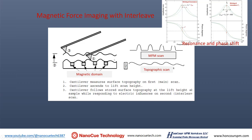The tip scans over the sample the first time with feedback to collect topography. On the second scan, the tip lifts at a separation distance and scans over the sample, recording the phase shift. This phase shift represents the magnetic field — of course, the tip and sample must have a magnetic force between them. So the tip must have a coating of magnetic material, typically cobalt or some other magnetic material, making the tip itself a magnet. The magnetic field between sample and tip produces attractive or repulsive force, causing the phase to shift, and you record that phase as the magnetic field reading of your sample.